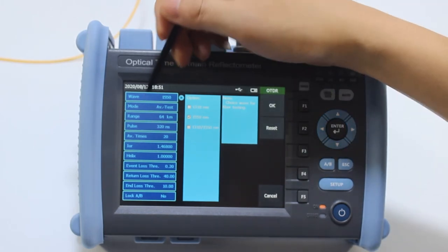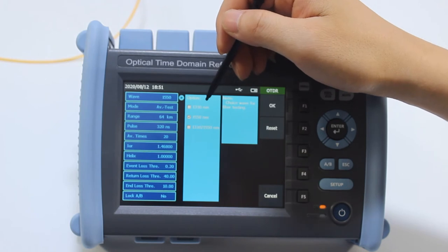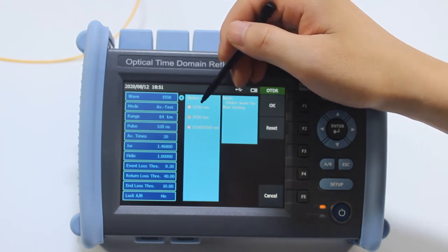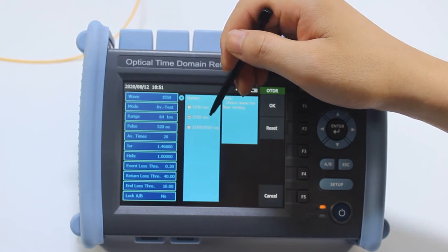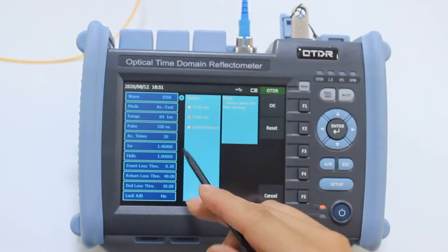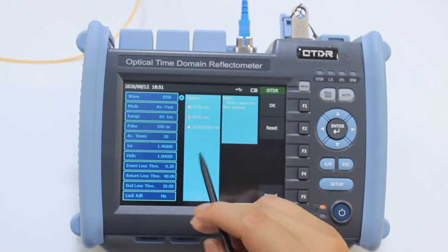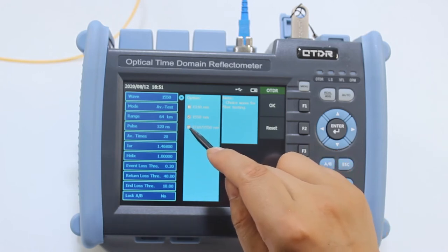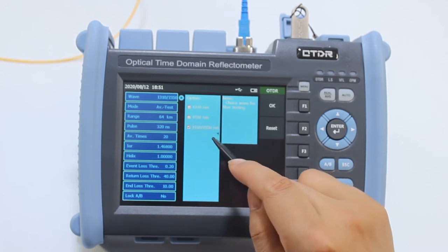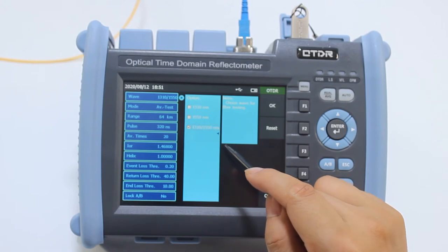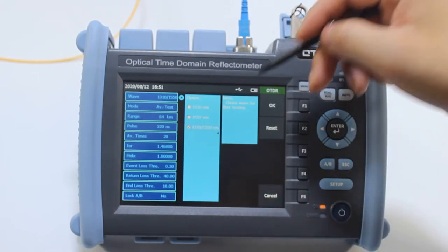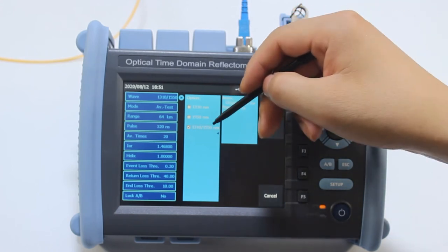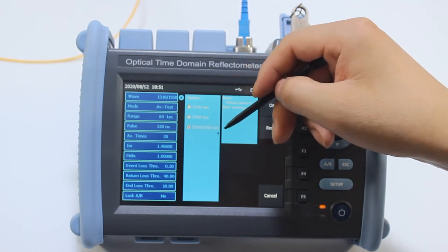Click Wave to select testing wavelengths. There are 1310, 1550, and 1625 nanometer. We select 1310 and 1550 nanometer. The testing will be tested at the two wavelengths at the same time.